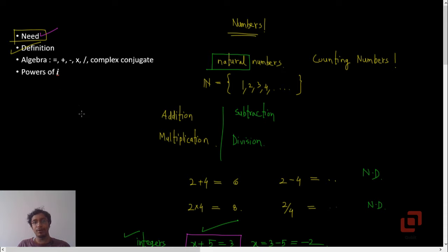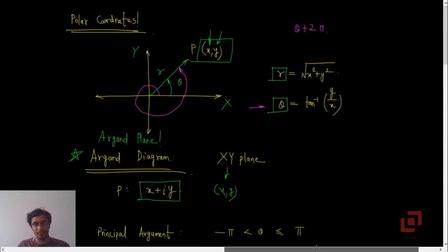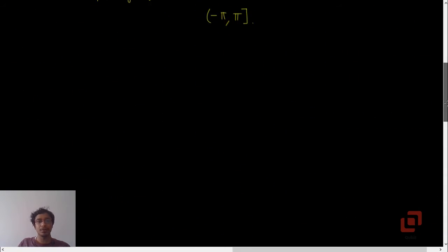Then let us talk about the algebra of complex numbers. In algebra we will define the operations on the complex numbers. First, let us talk about addition. Suppose we have two complex numbers x1 plus i y1 and x2 plus i y2.